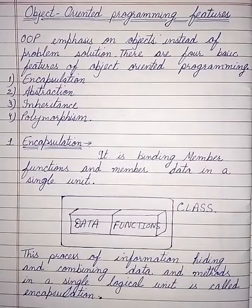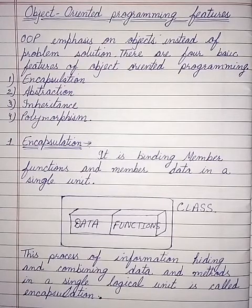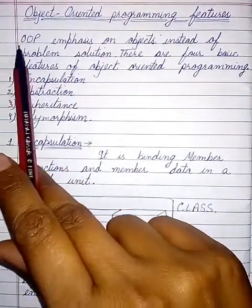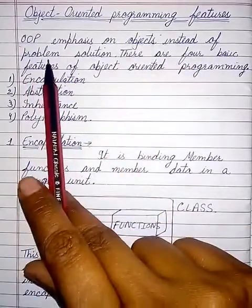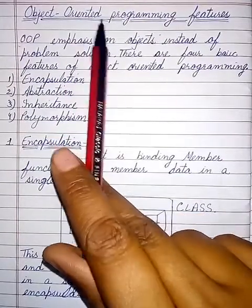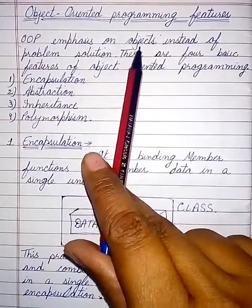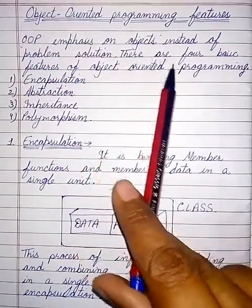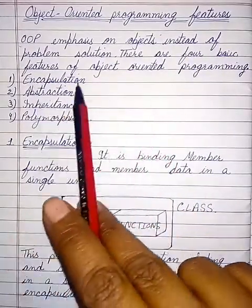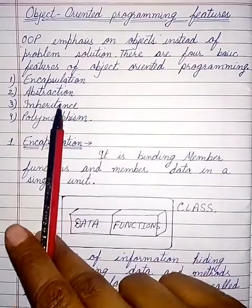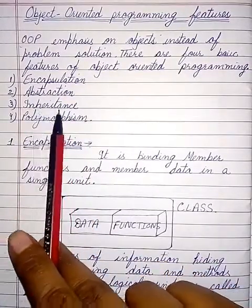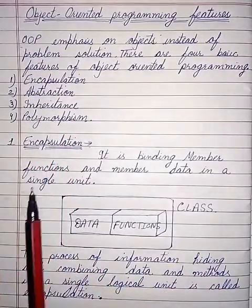Today we will do the topic of object oriented programming features. We are going to explain the features of object oriented programming. Object oriented programming emphasizes on objects instead of problem solution. There are four basic features of object oriented programming: encapsulation, abstraction, inheritance, and polymorphism. We will explain each of them.